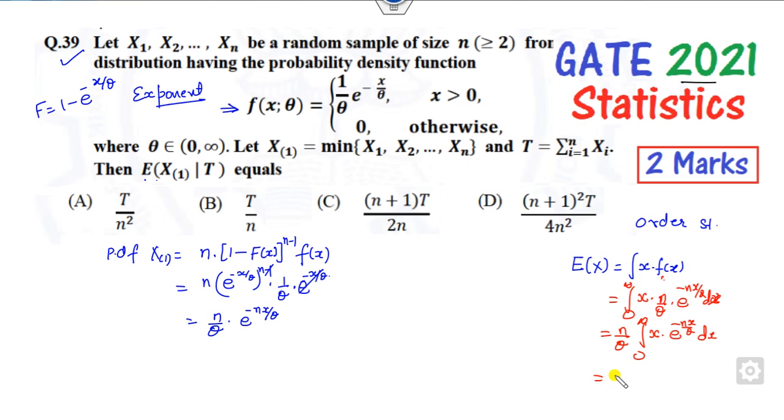After the calculation, the answer is θ/n. But since we need the conditional expectation with respect to T, how do you find that?